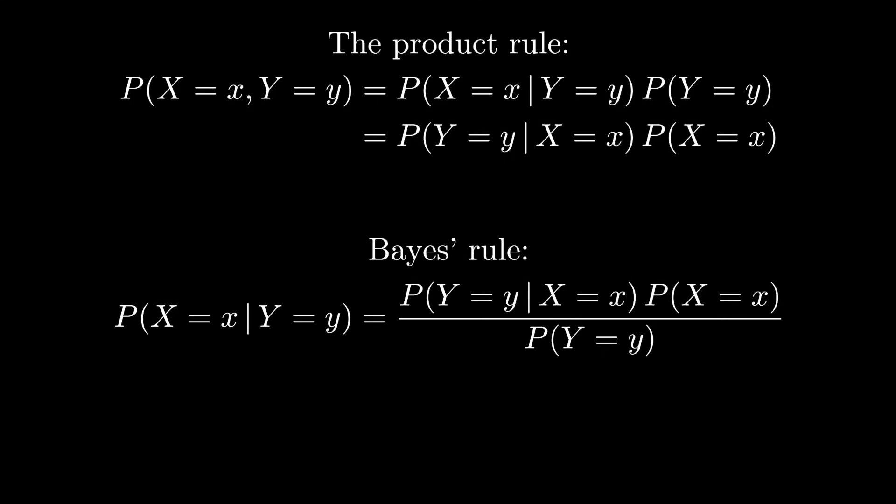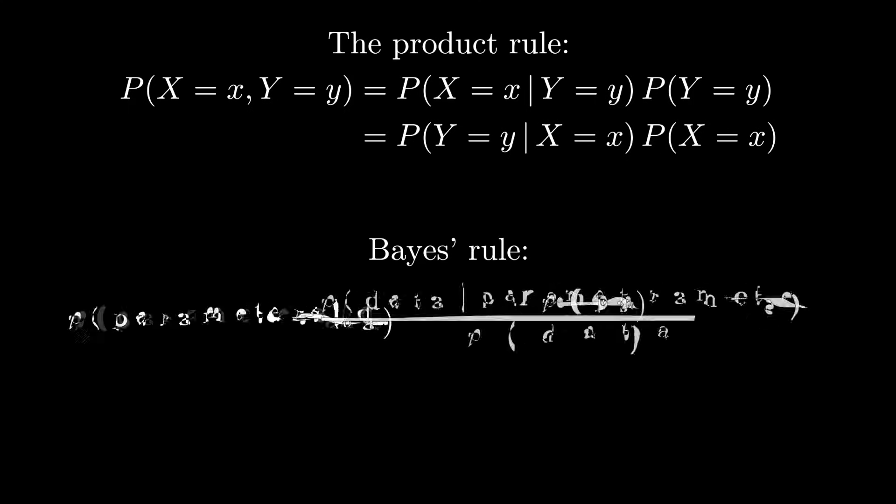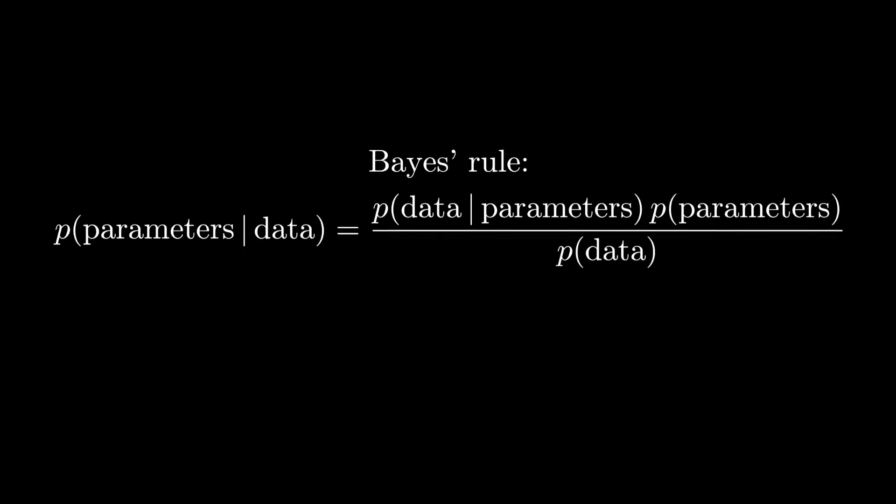The celebrated Bayes rule is really just taking both bits on the right and dividing both of them by the marginal over y. So Bayes rule is really just an identity arising from the product rule. The reason Bayes rule gets a lot of attention in statistics and machine learning is more about interpretation of random variables than it is about the equation itself.